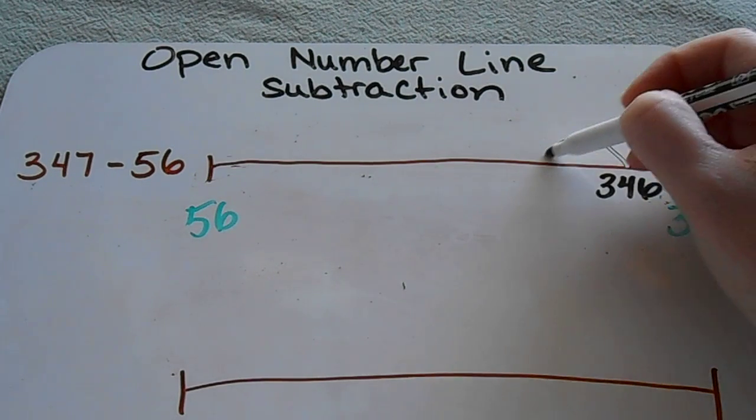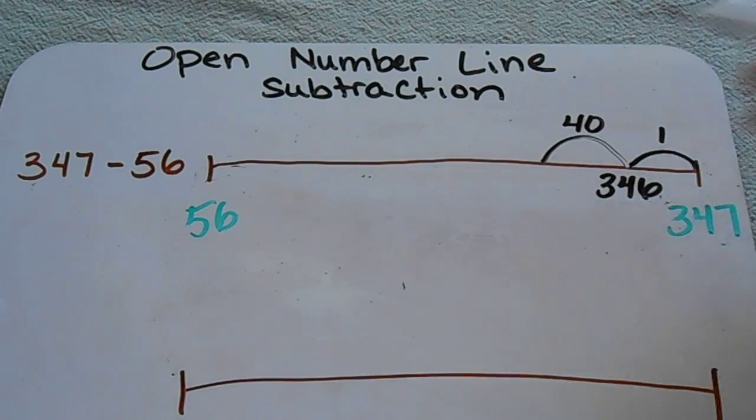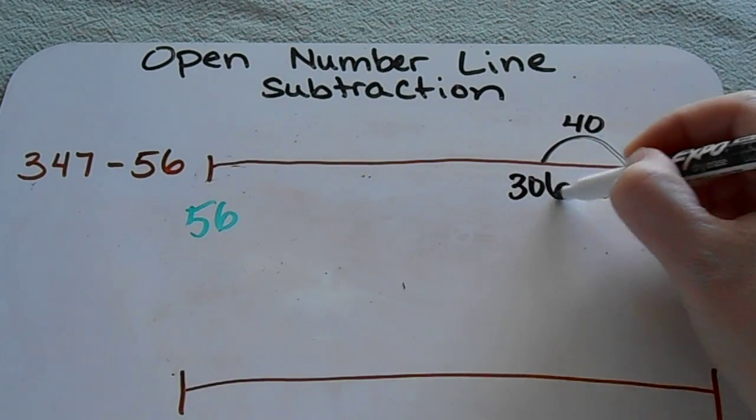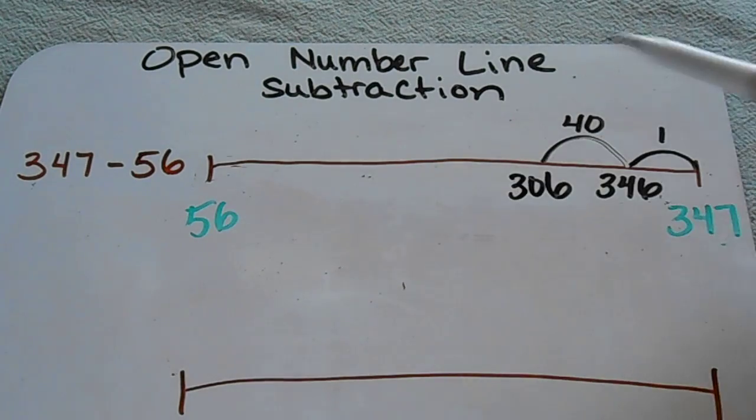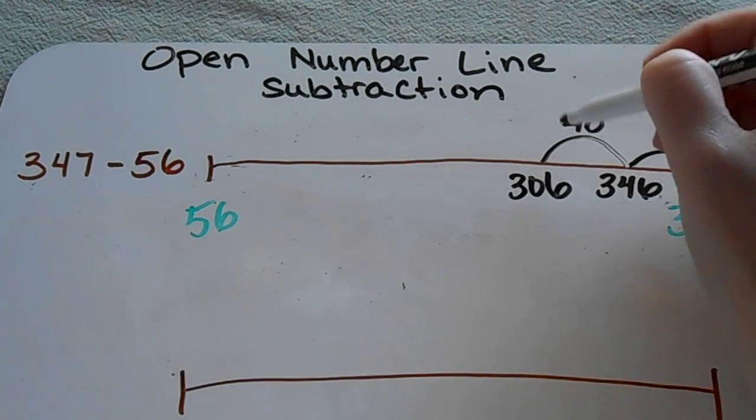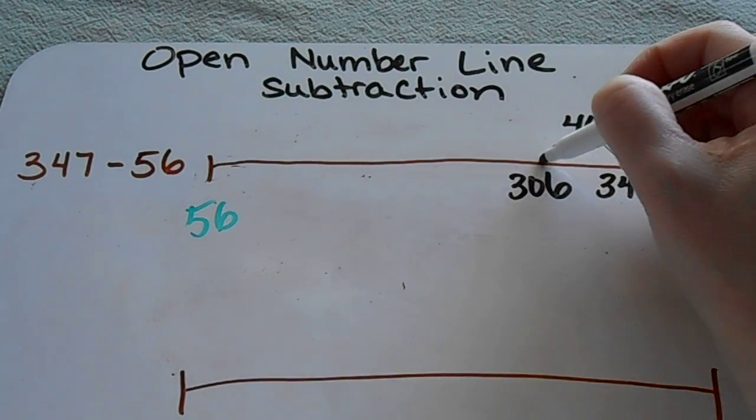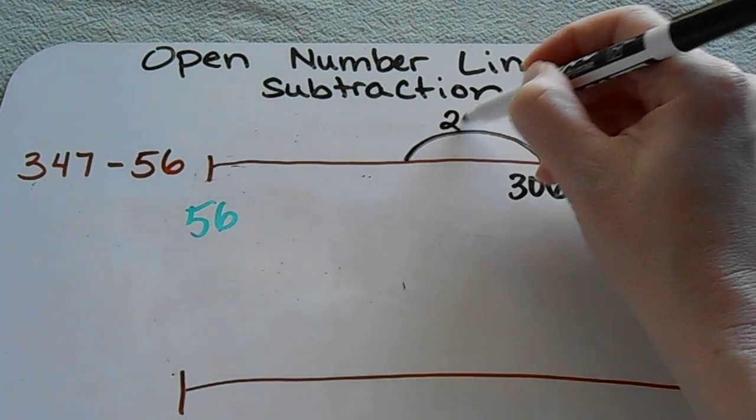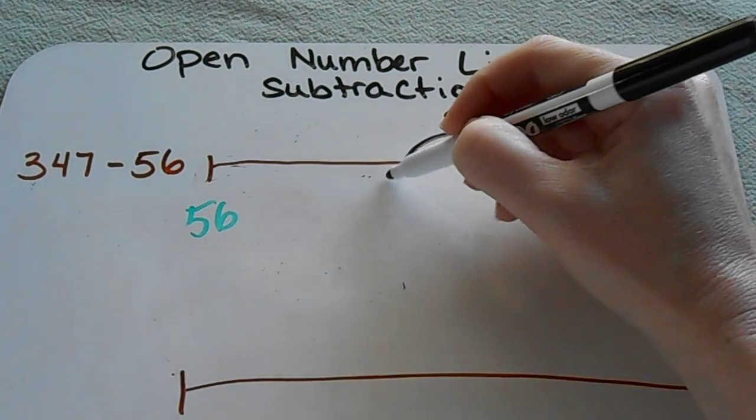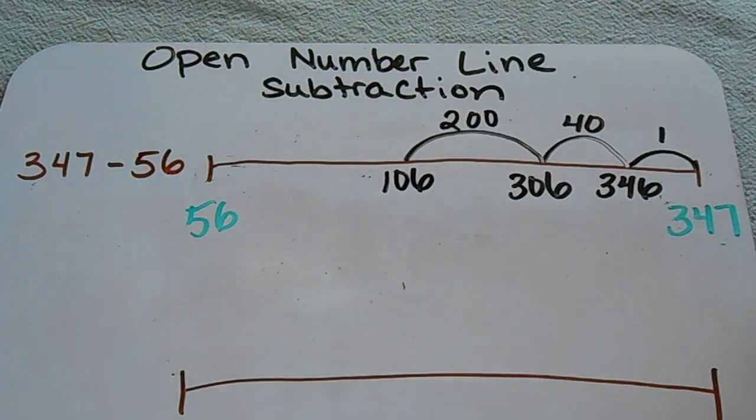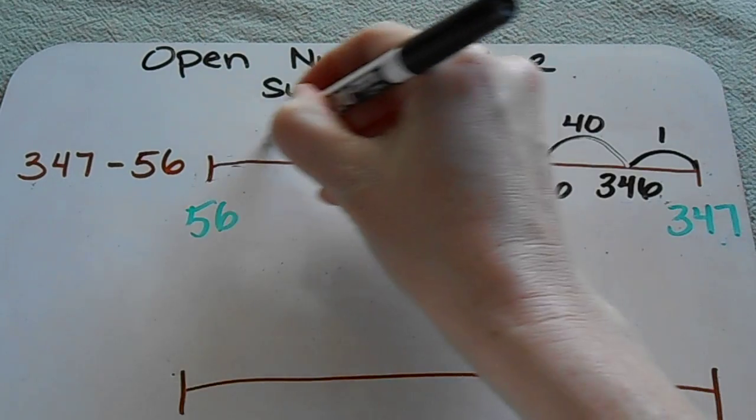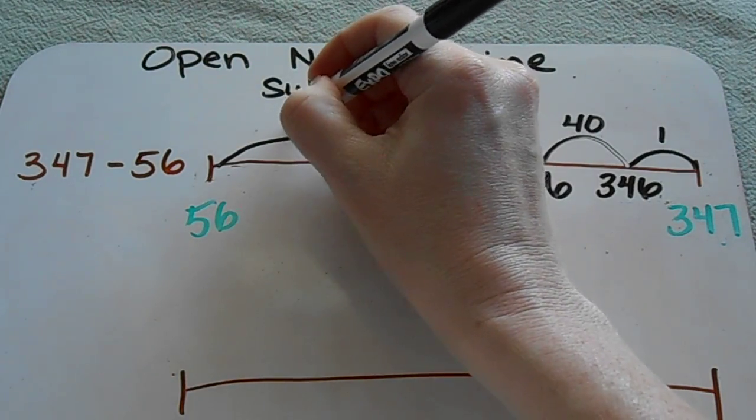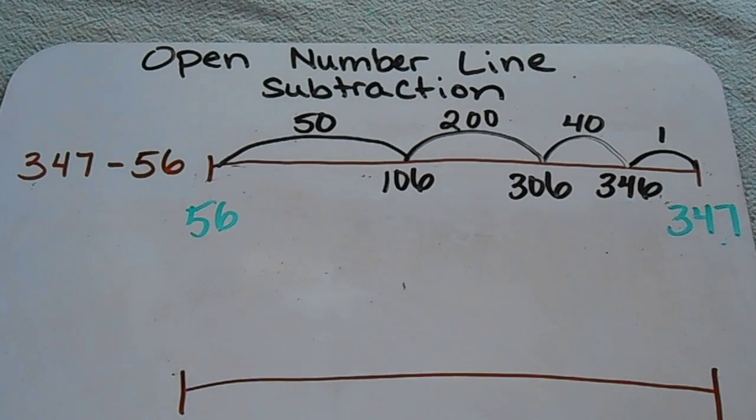Now I'm going to make another jump. I'm going to jump 40 units and I'm still working toward getting down to 56. Now I'm going to make another jump of 200 units, so that's going to put me at 106. Now I can see that all I need to do is make one more jump worth 50 units to get down to 56.